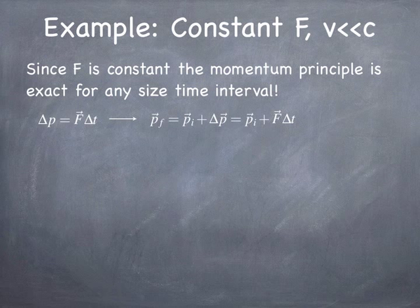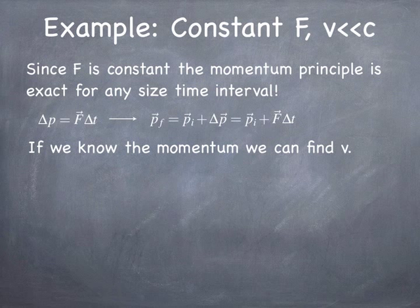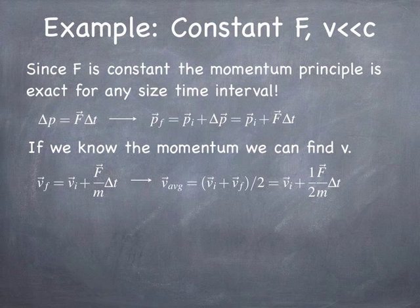The final momentum is the initial momentum plus the change in momentum. If the velocity is much less than the speed of light, then the velocity is simply the momentum divided by the mass. Dividing both sides of the equation by the mass, the final velocity equals the initial velocity plus the force — which is constant — divided by the mass, times the change in time. Using the arithmetic mean of initial and final velocities, the average velocity equals the initial velocity plus one-half of the force divided by the mass times the change in time.